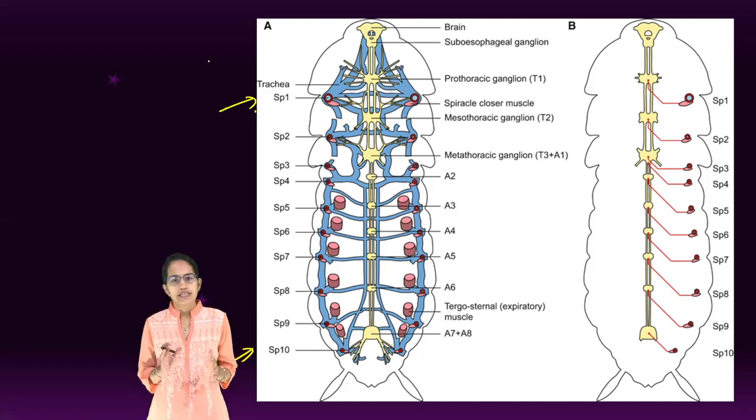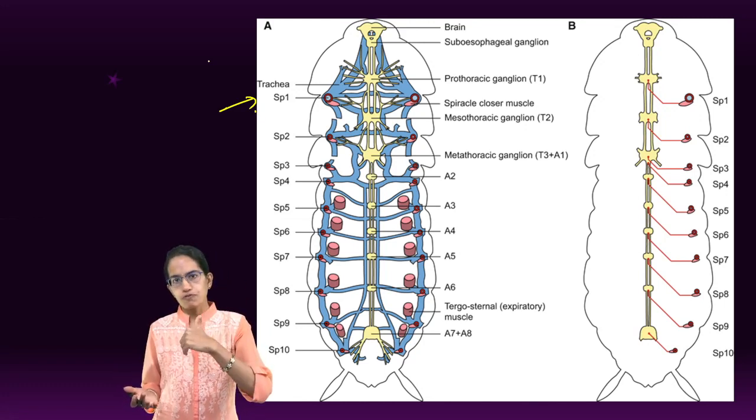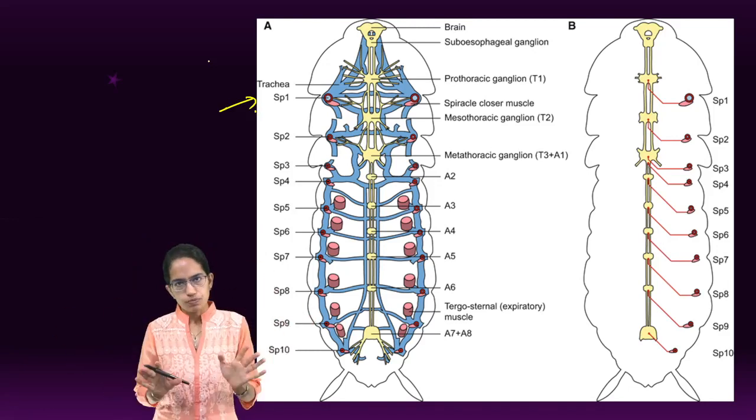The trachea is divided further into the tracheoles and by the process of diffusion, oxygen from the air is taken and supplied to the various parts of the cockroach.